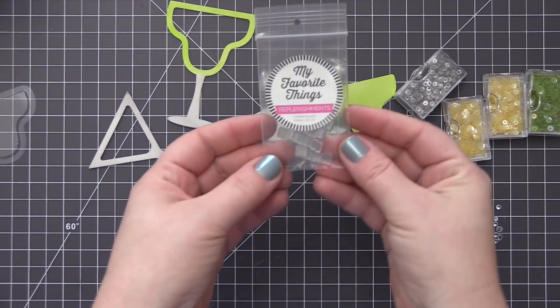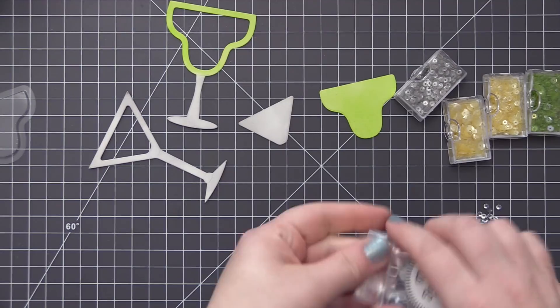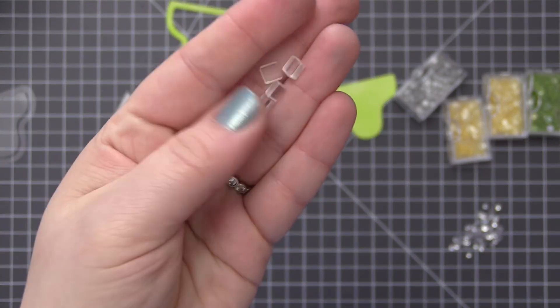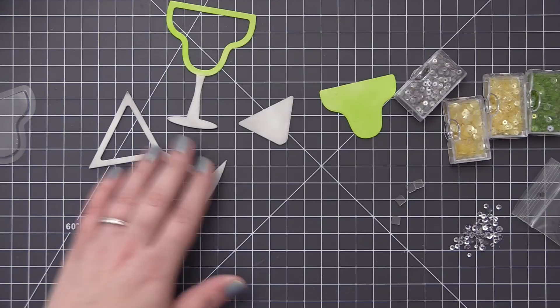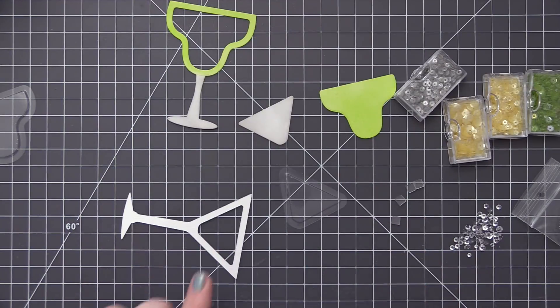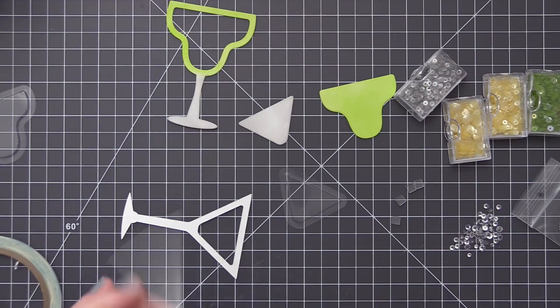And then once I have that done we're done with our inking and we can start to work on the shaker portions. So I have these great new frosty ice cubes. I love these little tiny things. They look like little tiny ice cubes that fit really nicely inside of both of these glasses. It's just a really cool look and really makes them look realistic.